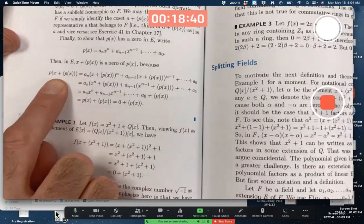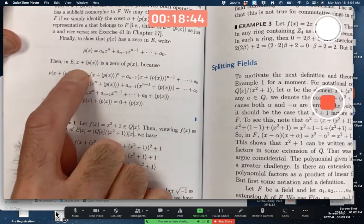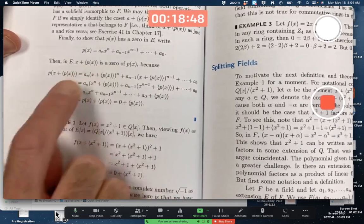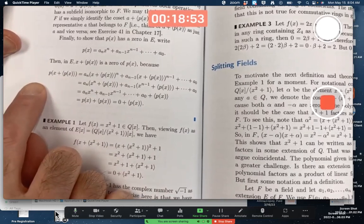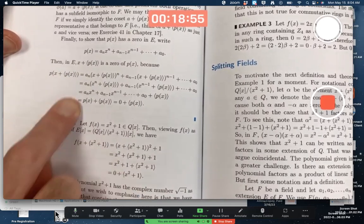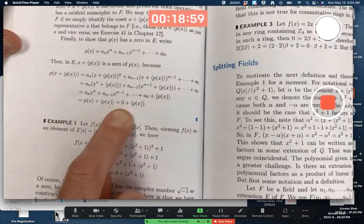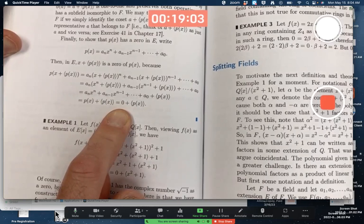Now we may think of E as containing F by identifying this coset with a. And down here is where they essentially are doing the calculation that I just did. x + the ideal is going to be a zero. They're plugging x + the ideal generated by p into p itself. Just a generalization of what I just did, and getting the zero coset in the end.